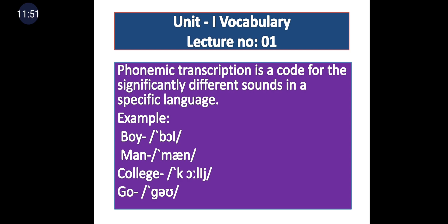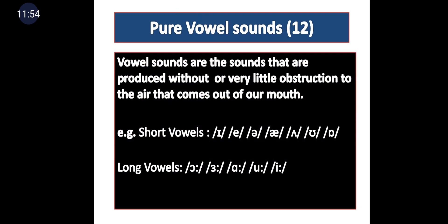The first session is about pure vowel sounds. A pure vowel means a single vowel — no mixture, no combination of two vowels. A vowel sound is produced when air coming from the bronchial tubes and lungs is not obstructed anywhere in the passage of the mouth, or if obstructed, it is only very slightly.